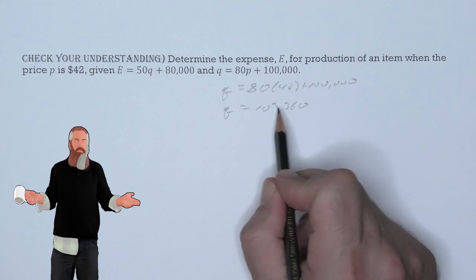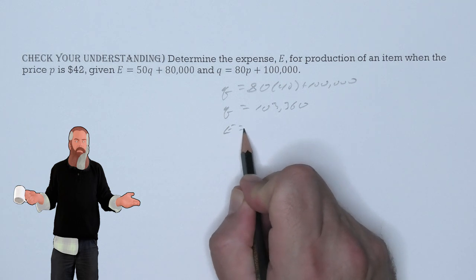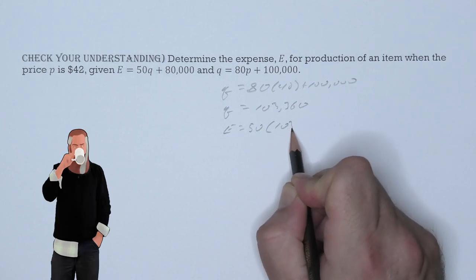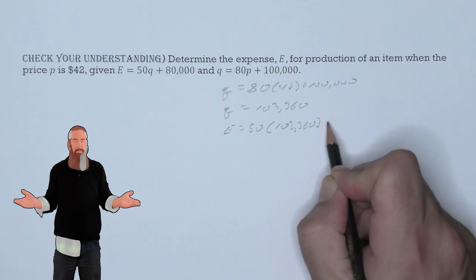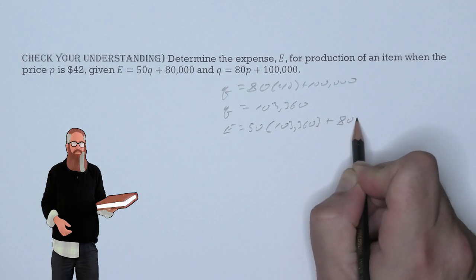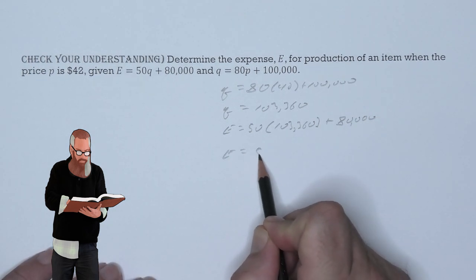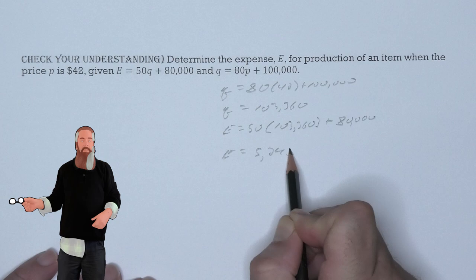We now need to put this Q value into the E equation. So that E is 50 times 103,360 plus 80,000. This will give us an expense of $5,248,000.